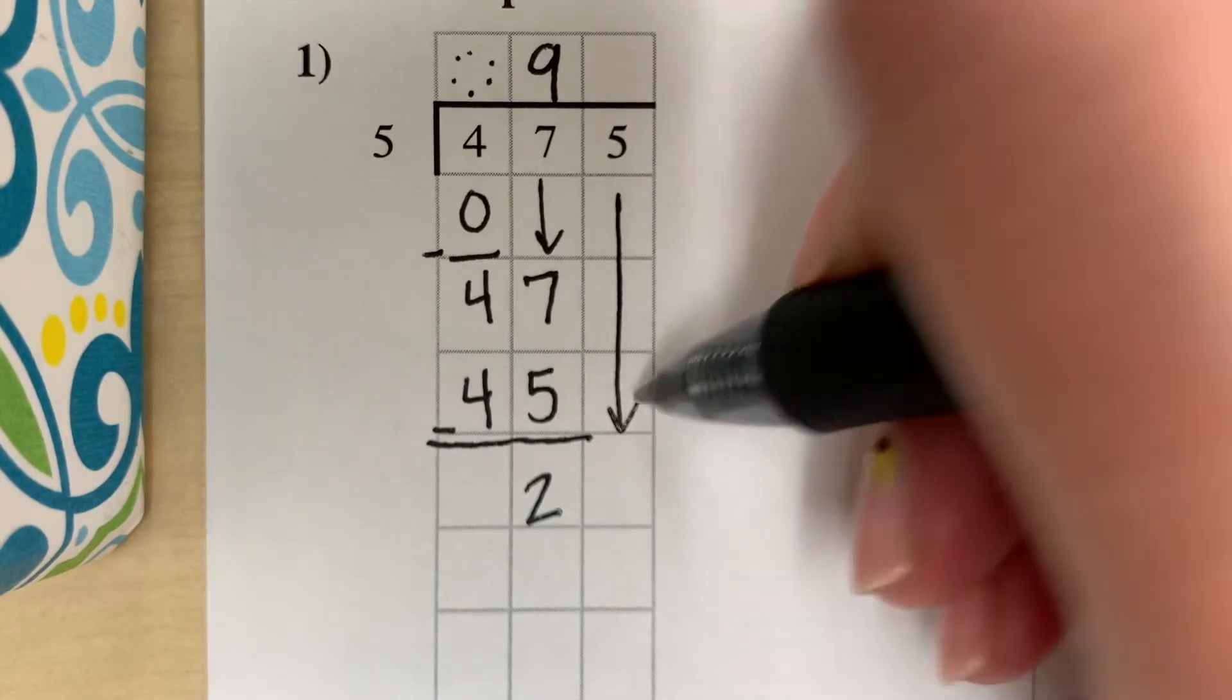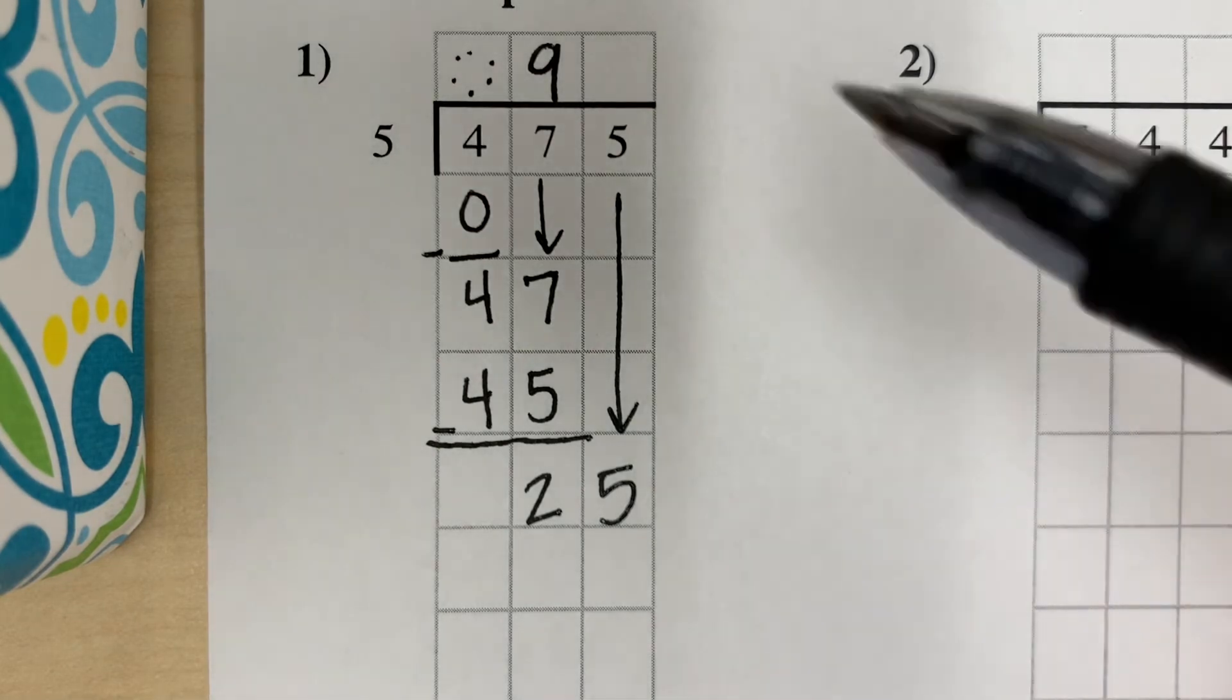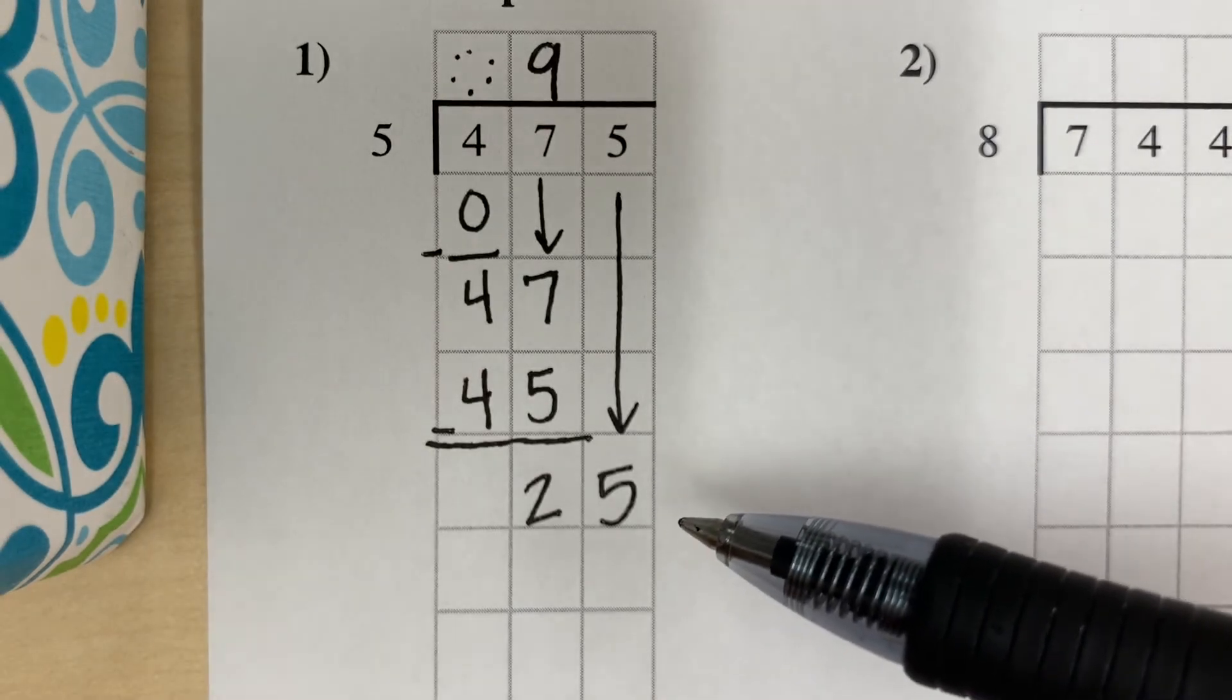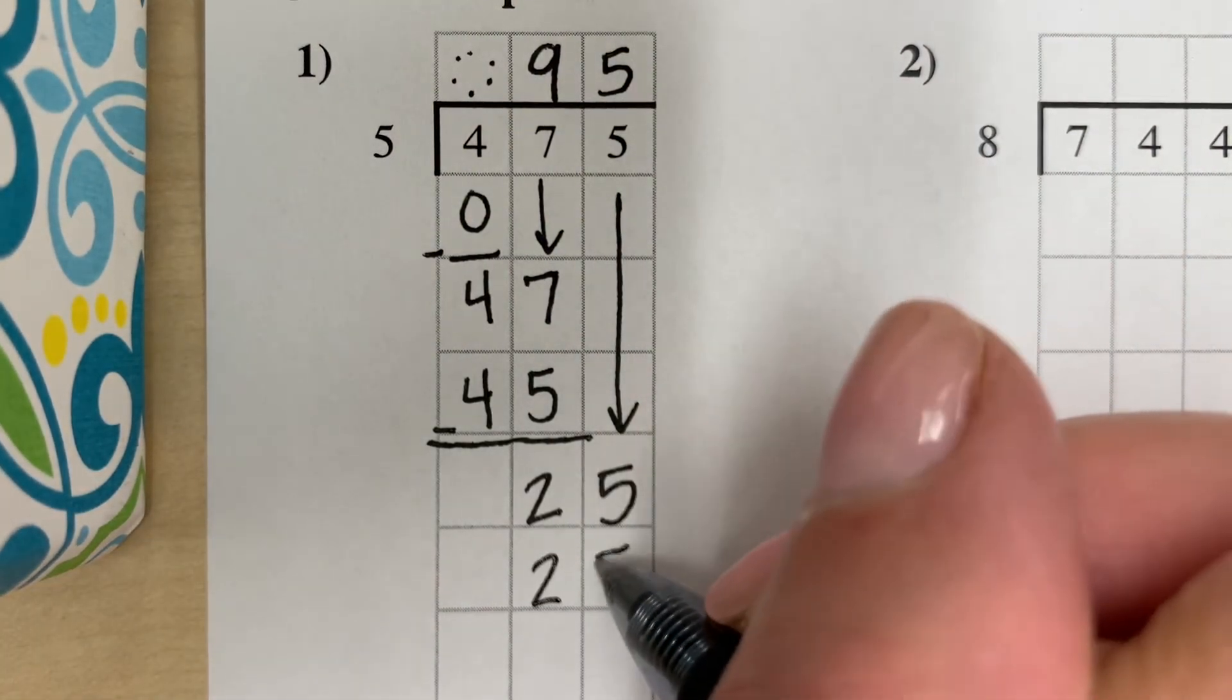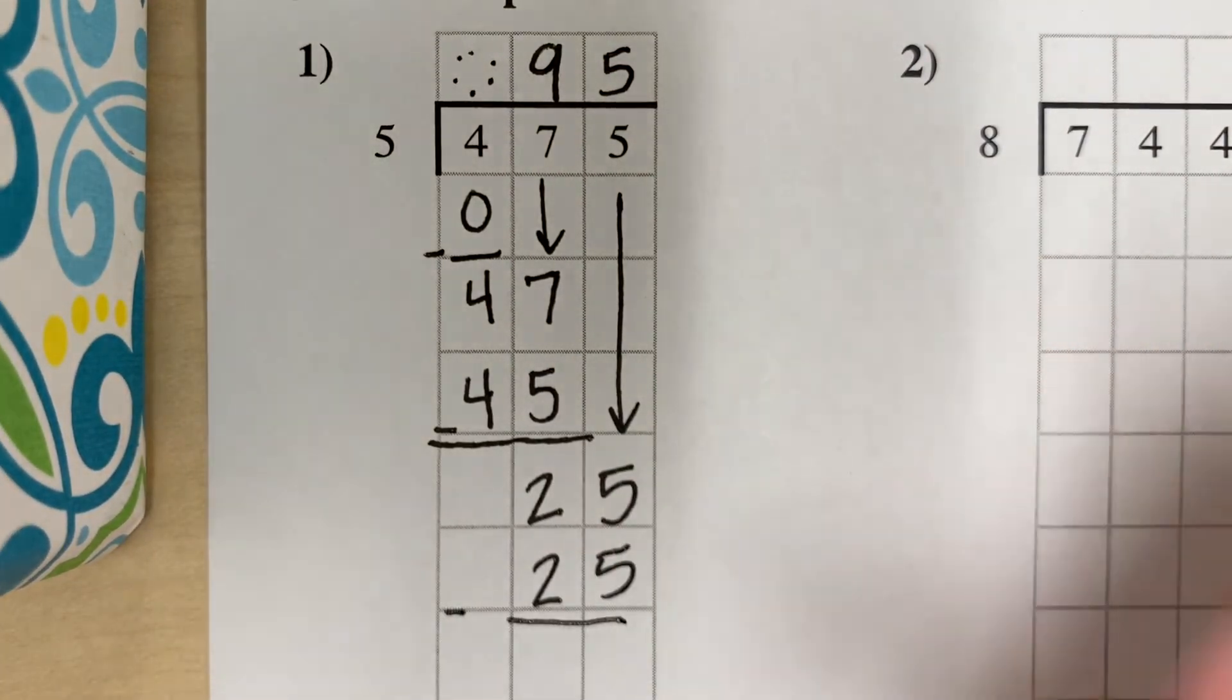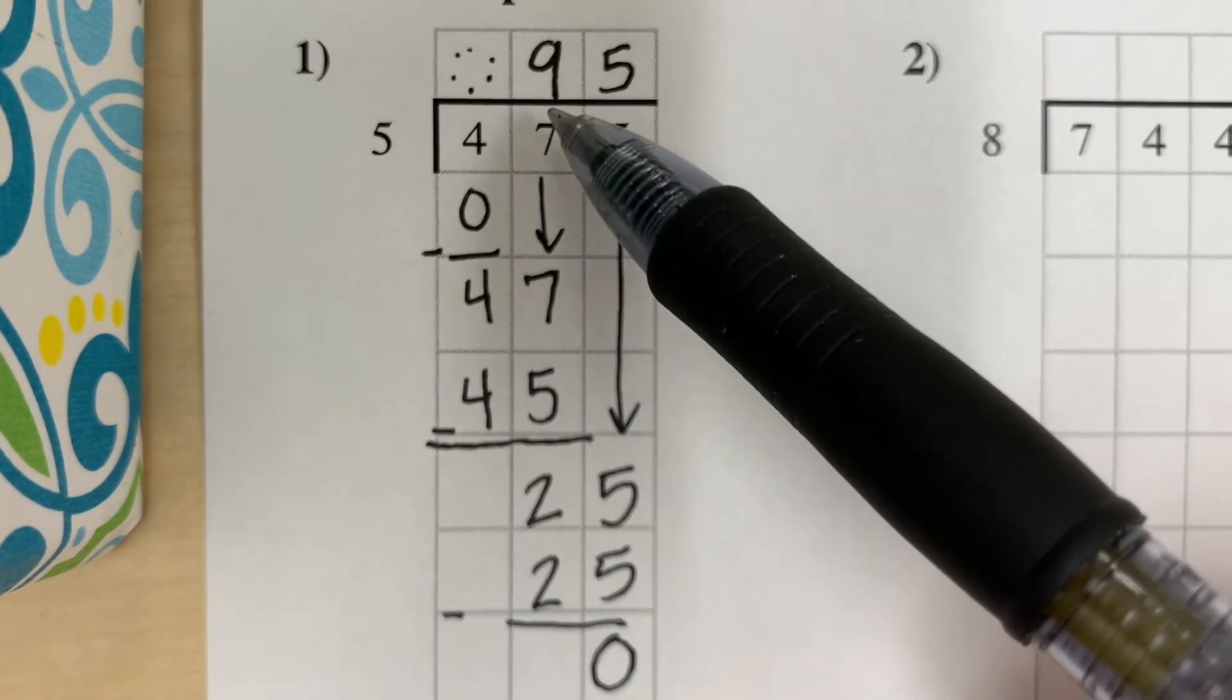Then we bring down our 5 next door. Now we have 25. If we have 25, how many groups of 5 can we make? How many times does 5 go into 25? Well, 5 times 5 is 25. We'll put our 5 up here. That means we used all 25 of them, because 5 times 5 is 25. And that leaves us with 0 left over. So 475 divided by 5 is 95.